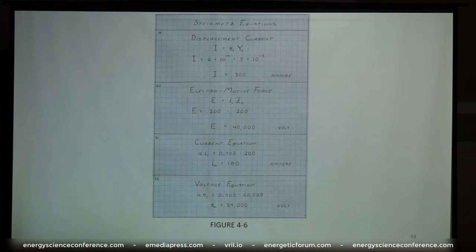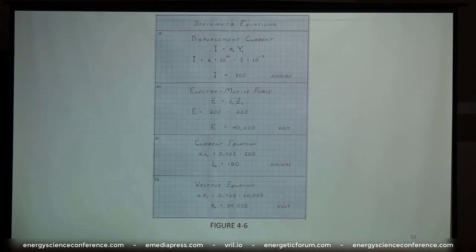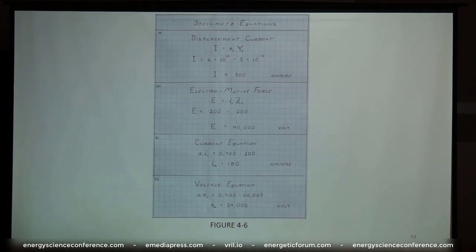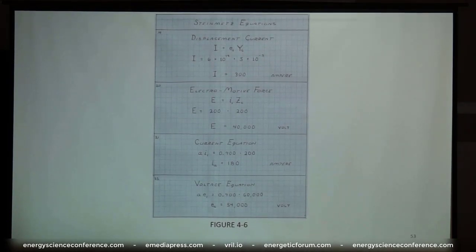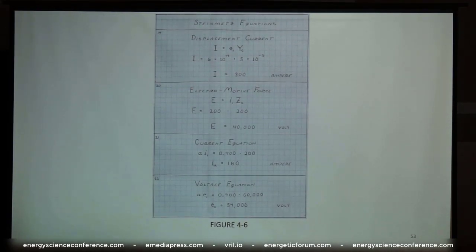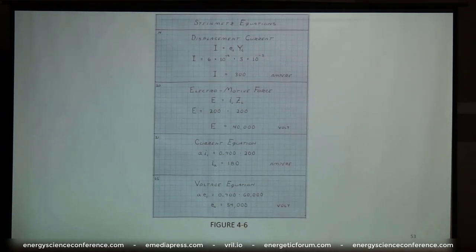The electromotive force of the line is the product of the current flow in the line and the characteristic impedance of the line, and that gives us 40,000 volts. I have to point out here, these are not things that you can measure with voltmeters or amp meters. Electromotive force and displacement current cannot be measured under electromagnetic circumstances.